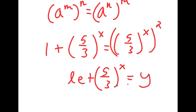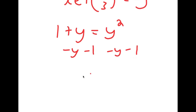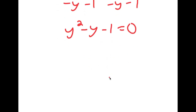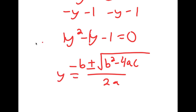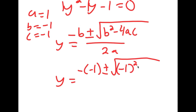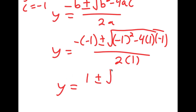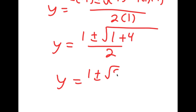I'm going to let (5/3)^x equal the variable y. So I get 1 plus y is equal to y squared. Subtracting y and 1 from both sides gives y² minus y minus 1 equals 0. Using the quadratic formula — negative b plus or minus the square root of b²minus 4ac, all over 2a — with a=1, b=−1, c=−1, I get y equals 1 plus or minus the square root of 5, all over 2.